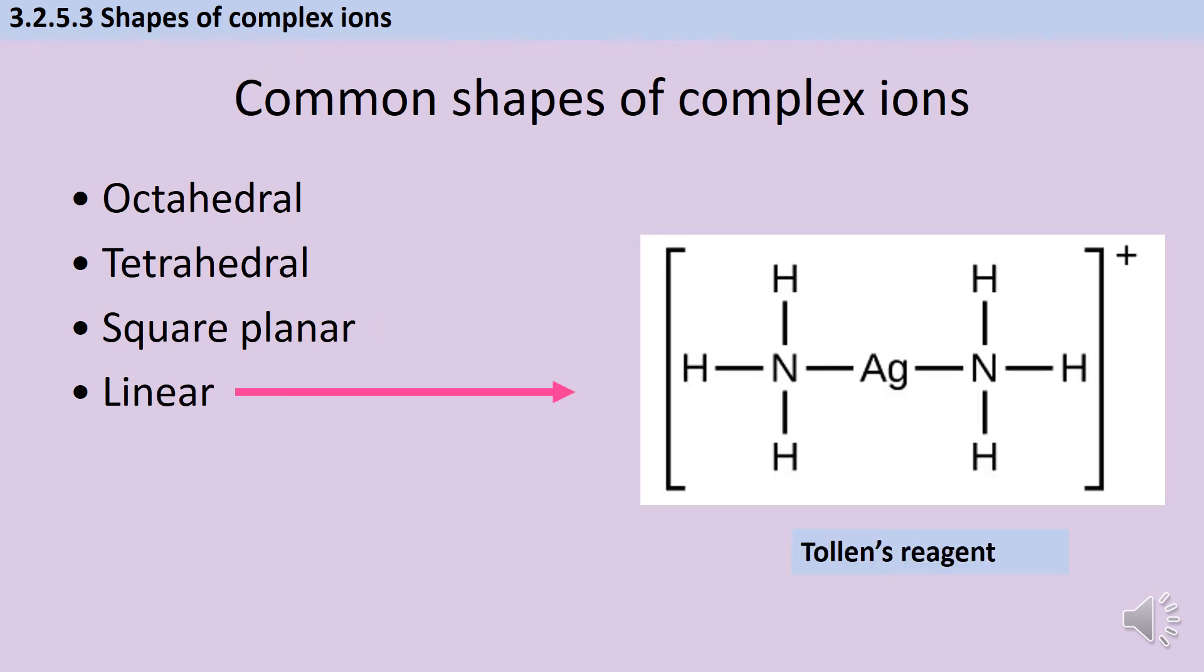The final shape that you need to know about the complex ions, although you do still need to know all the others for just general molecules, is the linear shape. And this is going to happen when you only have two ligands. And a really good example of this is the silver complex that is part of Tollins reagent.